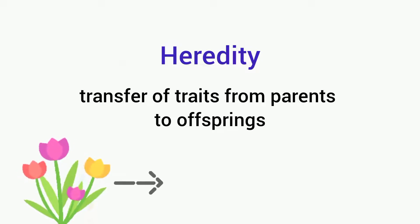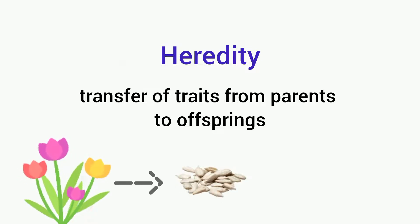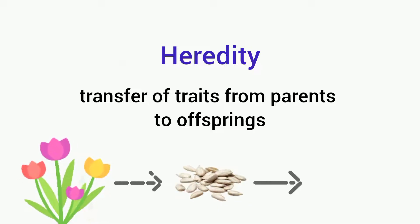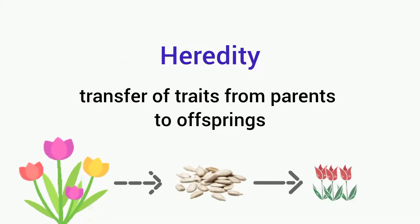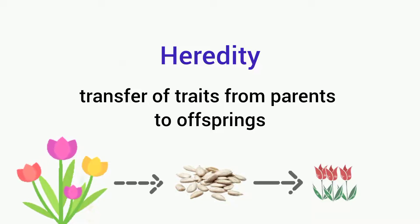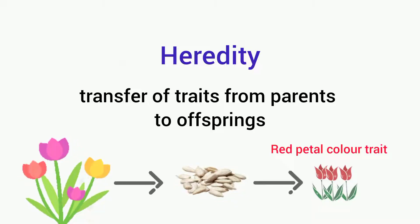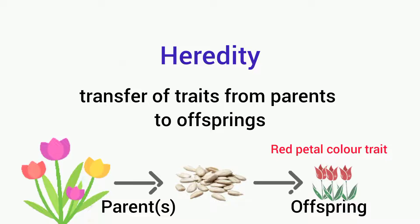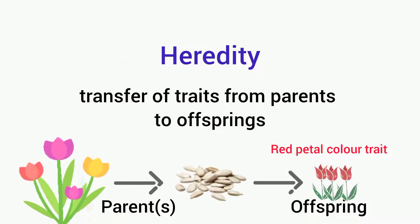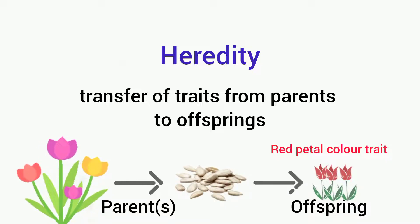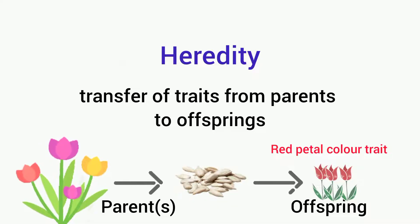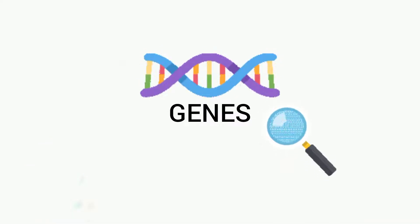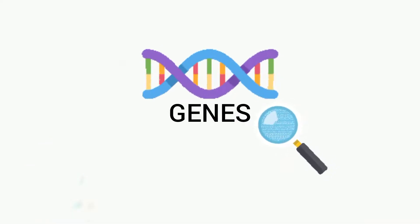Look at these plants producing seeds and a progeny — you will see that a particular trait, the red petal color, has been transferred to the offspring. For scientists to understand what causes this transfer of traits, they still need to study the genes of the offspring.